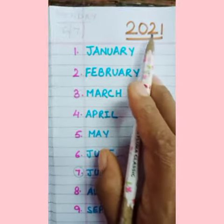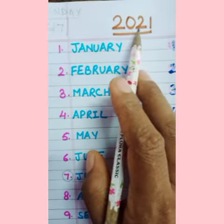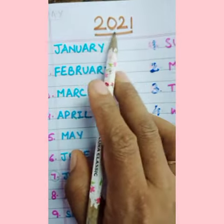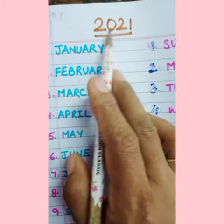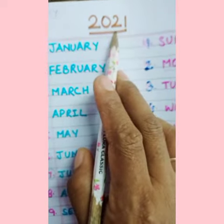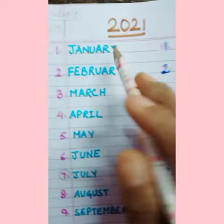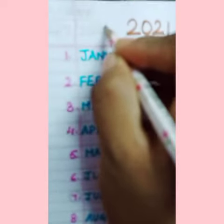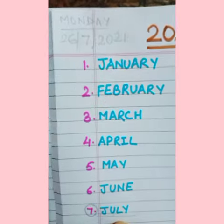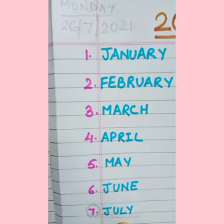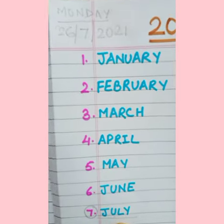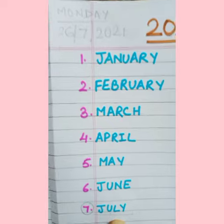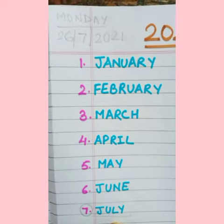And which year is this? This is 2021 — two, zero, two, one. So we will write here two, zero, two, one. In this way, children, write the date of today.